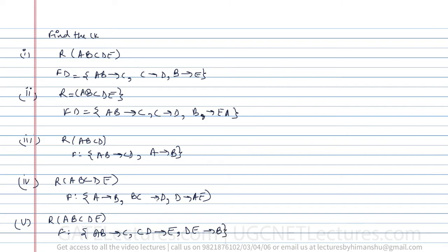Now let us take the first option and find the candidate key. The relation is R(A,B,C,D,E) — five attributes — with those functional dependencies. The shortcut: check the right-hand side of every functional dependency and see what attributes are not present. You can clearly see C, D, and E are present on the right-hand side, but A and B are not.